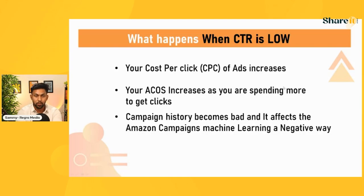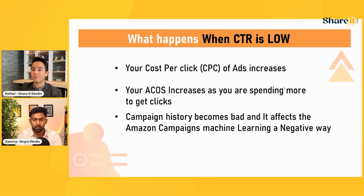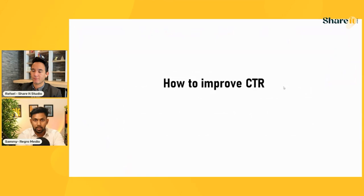When your cost per click increases, your ACoS increases because you're spending more to get those clicks. You're forcing Amazon to get those clicks. Campaign history becomes very bad because it gives a negative signal to Amazon's algorithm — customers are seeing the ad but not clicking, which signals Amazon negatively and causes your ad to start performing badly.